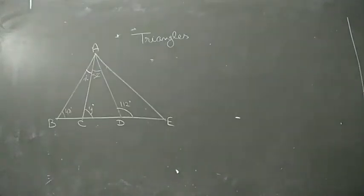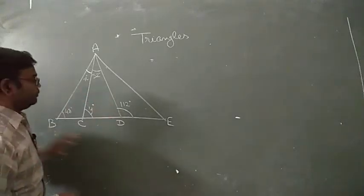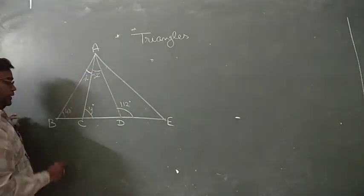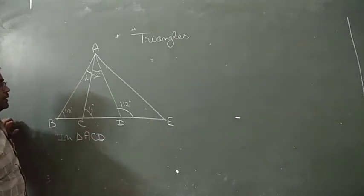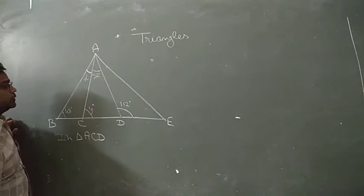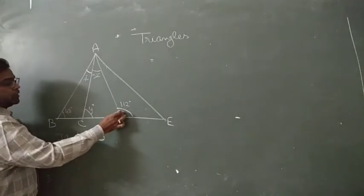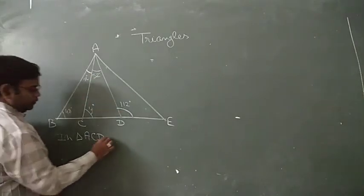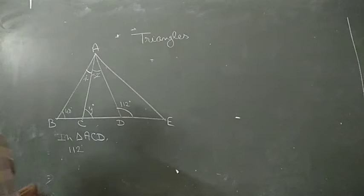Now look at this figure. The question asks to find the values of x and y. We look at triangle ACD — this is an exterior angle of triangle ACD, so it equals the sum of the two non-adjacent interior angles. The exterior angle here is 112 degrees.